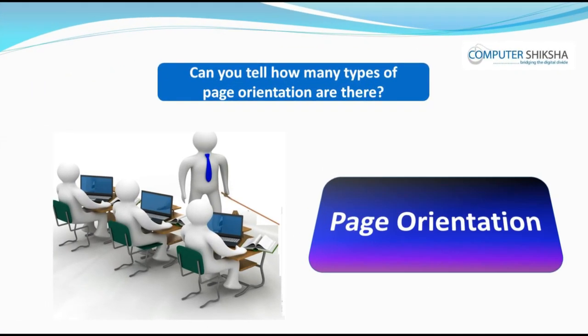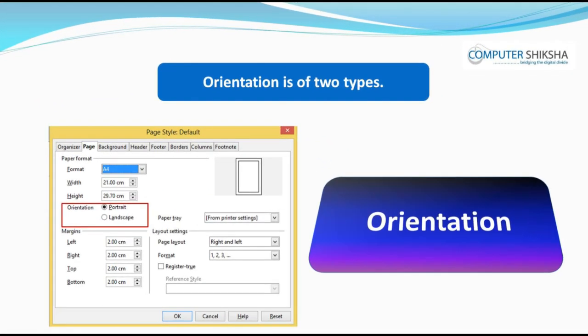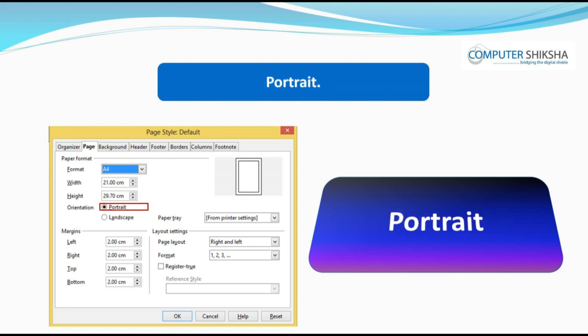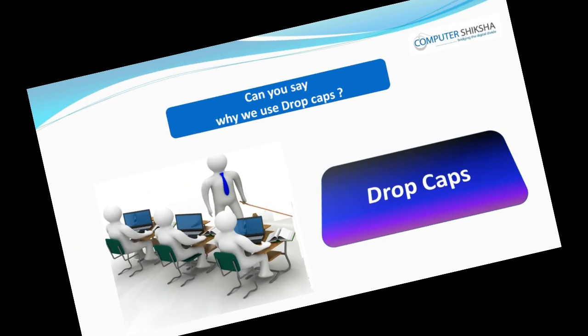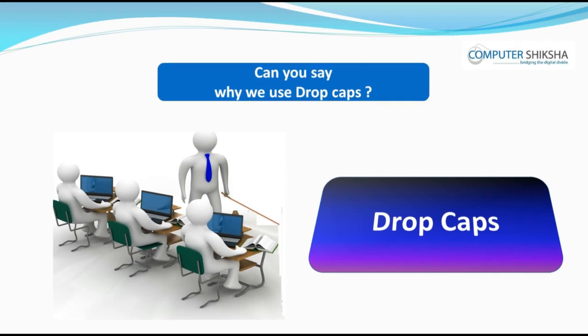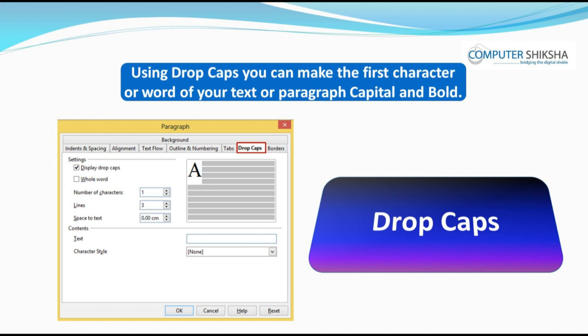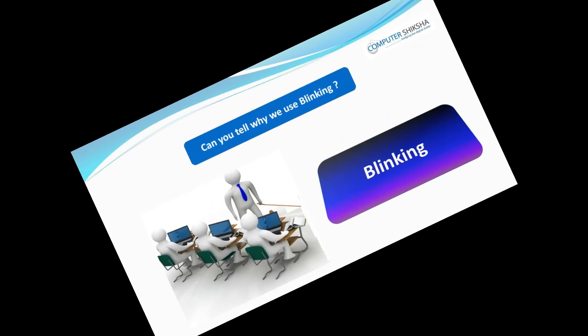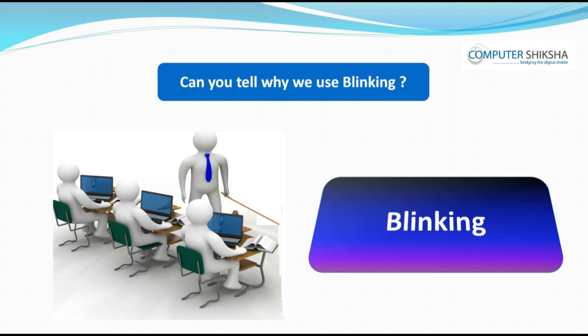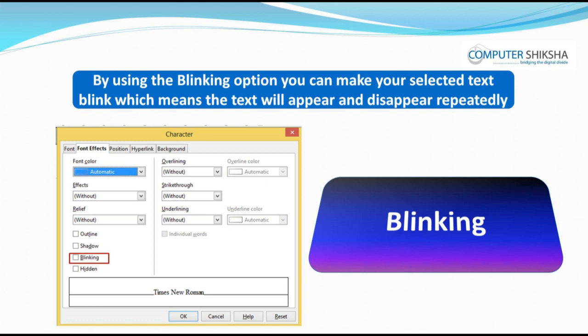Can you tell how many types of page orientation are there? Orientation is of two types: portrait and landscape. Can you say why we use drop caps? Using drop caps, you can make the first character or word of your text or paragraph capital and bold. Can you tell why we use blinking? By using the blinking option, you can make your selected text blink, which means the text will appear and disappear repeatedly.